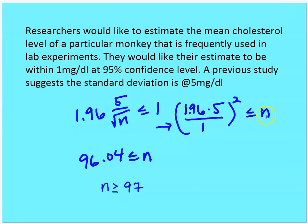Dividing both sides and solving for n: we get (1.96 × 5 / 1)² ≤ n, so n is greater than or equal to 96.04. Since we're sampling monkeys and can't have a fraction of a monkey, we round up to 97.